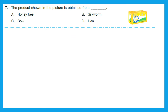Question 7: The product shown in the picture is obtained from? The product is butter, and butter comes from an animal — it's an animal product. Honeybee gives us honey, silkworm gives us silk, and C is cow. Cow is the right answer because we get butter from cow. Option C is the right answer.